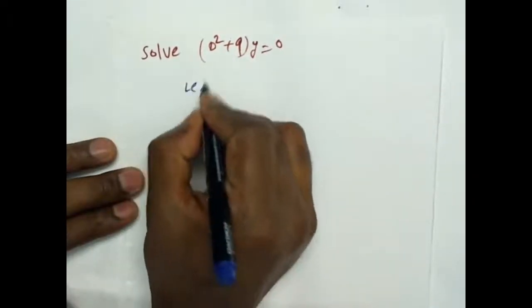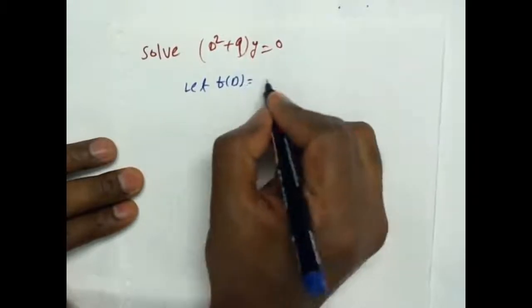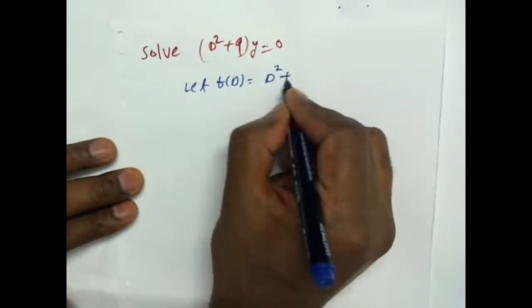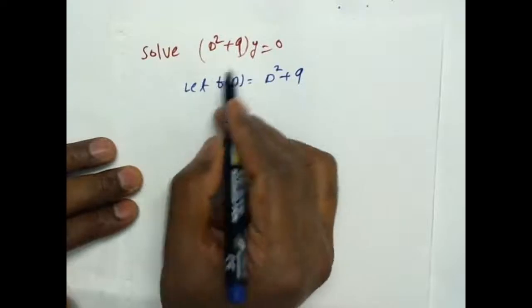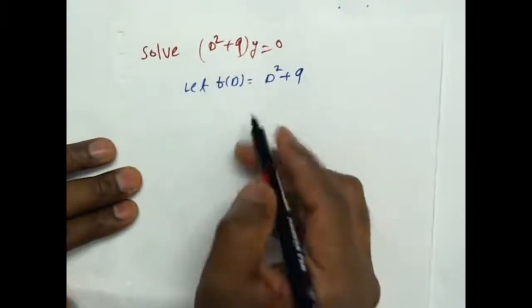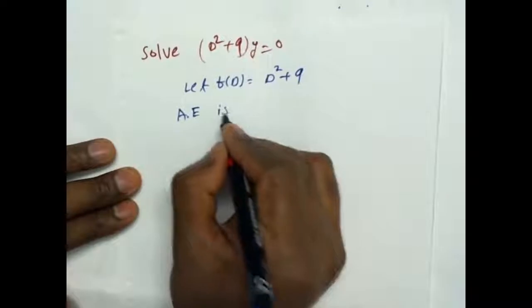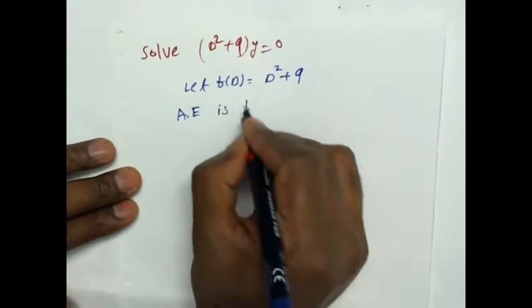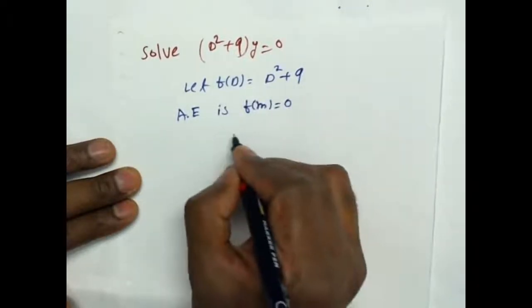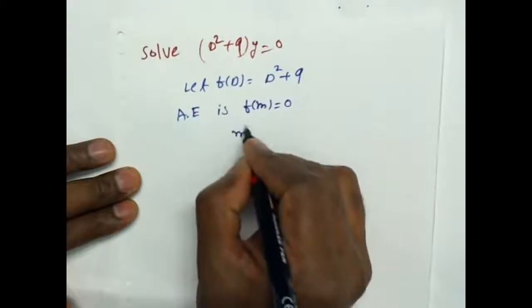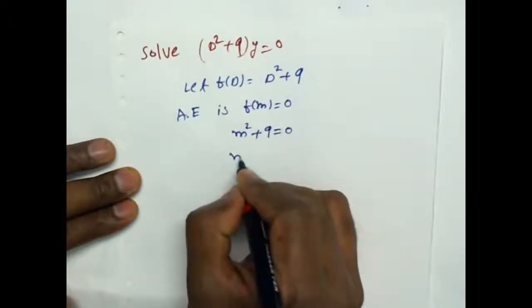Let f(D) = D² + 9. Now, the auxiliary equation is f(m) = 0.